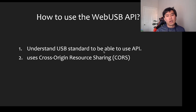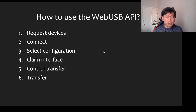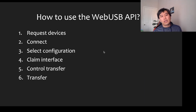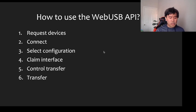To use the Web USB API, you first need to understand the USB standard and cross-origin resource sharing. Filter what can connect to USB: request the device, connect, select the configuration, claim the interface, control the transfer, and then transfer data back and forth. It's a little more complicated than the other APIs.